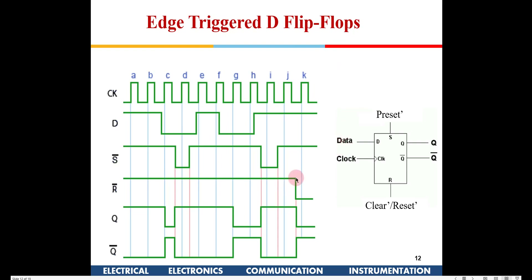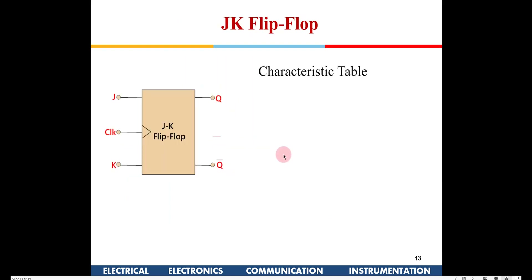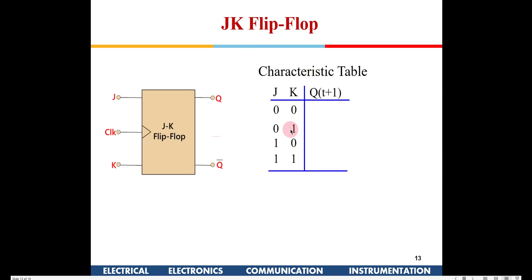This is known as an edge triggered D flip-flop — the most important thing to know for design purposes in the next class. There is also the JK flip-flop — its characteristics table has two inputs J and K instead of a single D input.